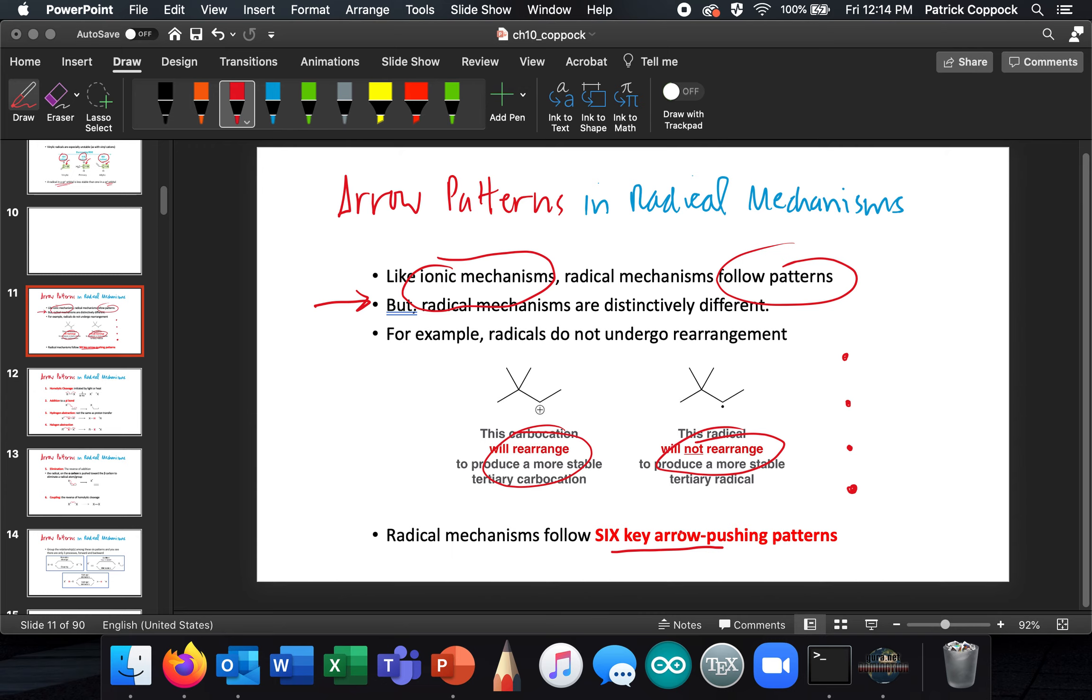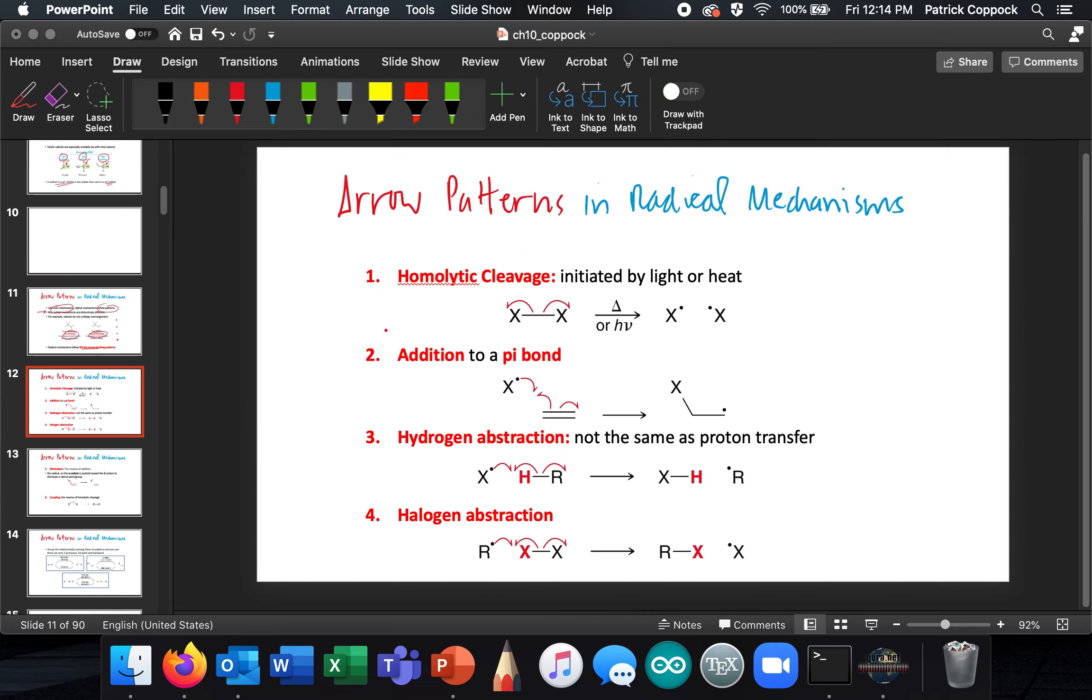So radical mechanisms follow six and let's look at them. Homolytic cleavage, which is what we already discussed, where one electron goes off with each atom. This is initiated by heat or light, and we're going to indicate light with an hν. This is for Planck's constant and ν is for frequency. Energy is equal to hν. This is the energy we get from light, and sometimes they're initiated by heat, which we'll indicate by a delta symbol. So homolytic cleavage, that's easy.